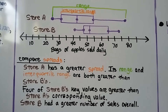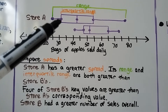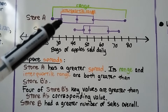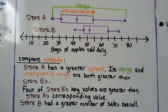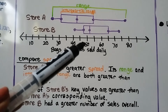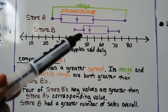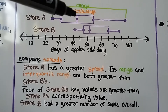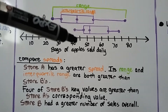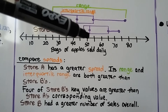Four of store B's key values are greater than store A's corresponding value. Store B has a greater number of sales overall. We can see that the range for store A is about 31 to 55, and for store B it's about 46 or 47 to 65. The median for store A is about 42 or 43, and for store B it's about 52.